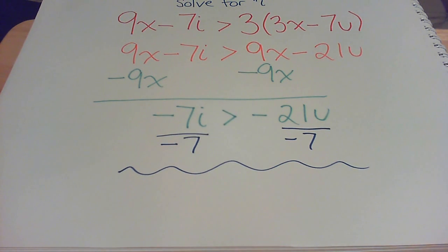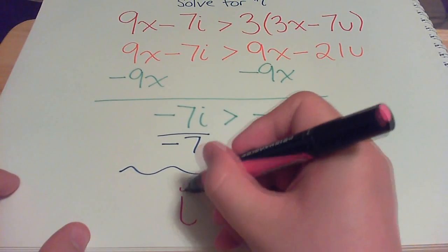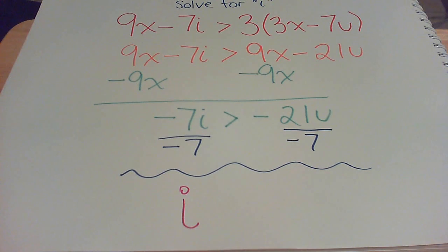Now the answer is going to be i, and then when you divide by a negative number the sign actually changes positions. So instead of it being like this, it would be like that. So it pretty much just switches directions. So it would be like this, and then...